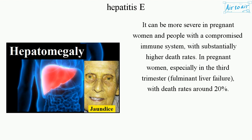It can be more severe in pregnant women and people with a compromised immune system, with substantially higher death rates. In pregnant women, especially in the third trimester, fulminant liver failure can occur with death rates around 20%.